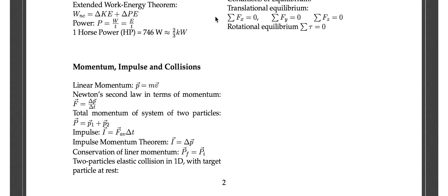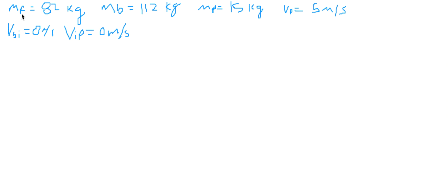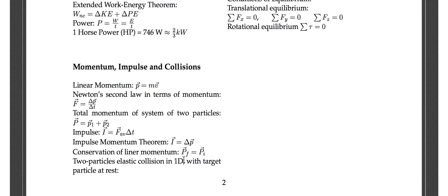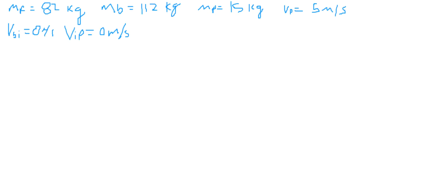We can use the conservation of linear momentum. We have the system of two particles: the mass of the boat with the man, and then the package. Conservation of momentum states that the total momentum is always conserved. We can add the mass of the fisherman and the boat together, since he's sitting in the boat and part of one particle. So 82 plus 112 gives us 194 kilograms for the total mass.